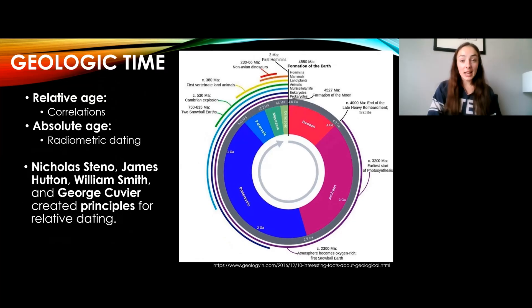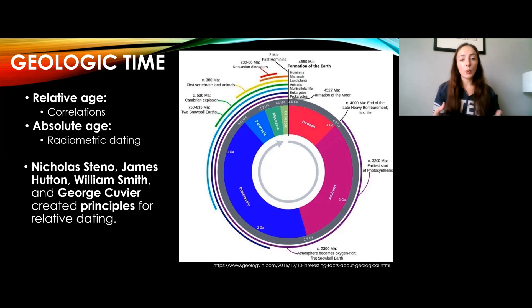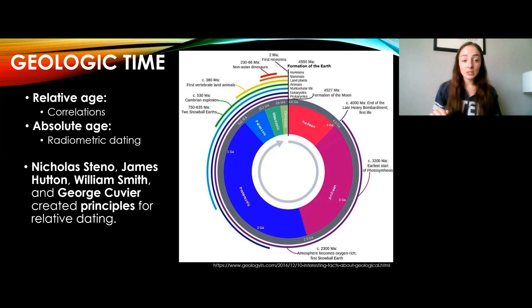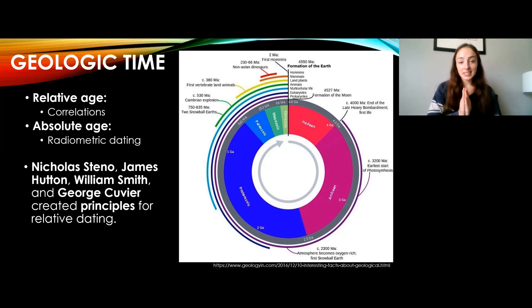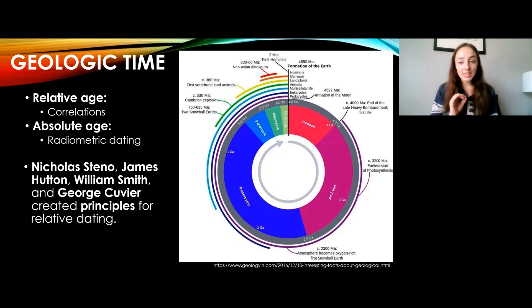Now getting into the difference between relative and absolute age: relative age is how we determine a rock's age using relative techniques — meaning relative to this rock, that rock is older. You can walk up to an outcrop with a few layers and say the layer on the bottom is older than the layer on top. We have principles for this, developed by Nicholas Steno, James Hutton, William Smith, and George Cuvier. Relative dating came along way before absolute dating, which involves radiometric dating. Relative dating is how we made the geologic timescale.